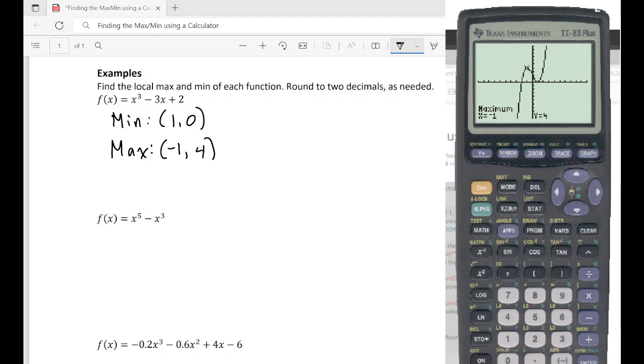Now we're going to go into this one. X to the fifth minus x cubed. So clear this off. So x to the fifth minus x to the third. And we're going to graph it and see what happens. So not very good. It's really far in there.